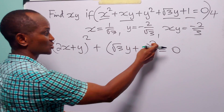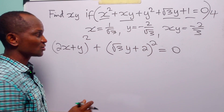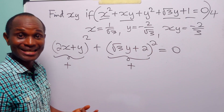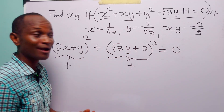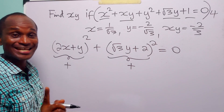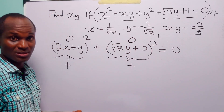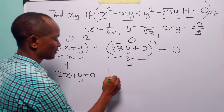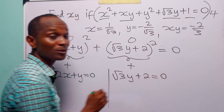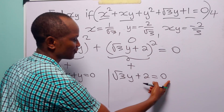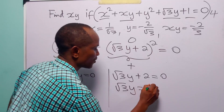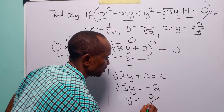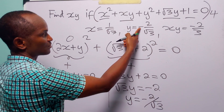You know that when you square a number it must be positive, so both terms are positive. But the equation says the sum of two positive numbers equals 0, which is impossible unless each is equal to 0. From root 3y plus 2 equals 0, subtracting 2 and dividing by root 3 gives y equals minus 2 over root 3 — exactly the same value as the first method.